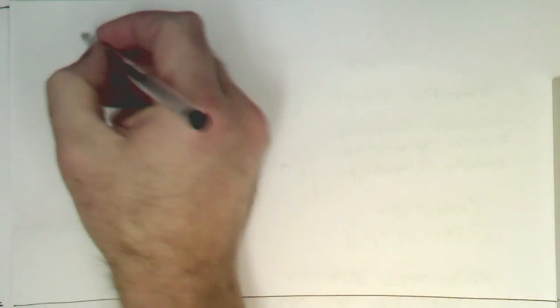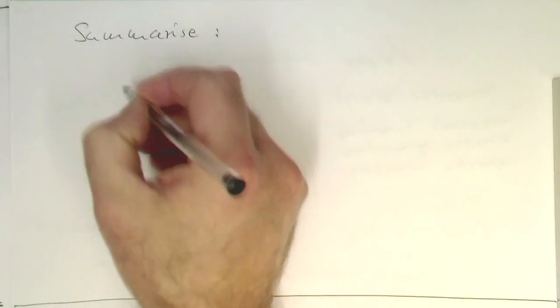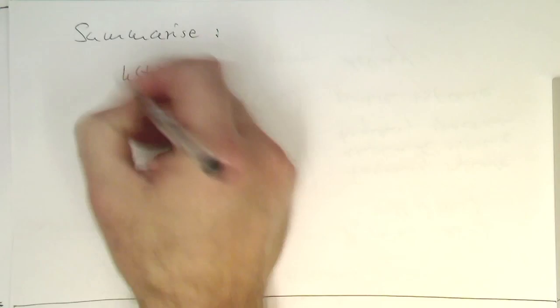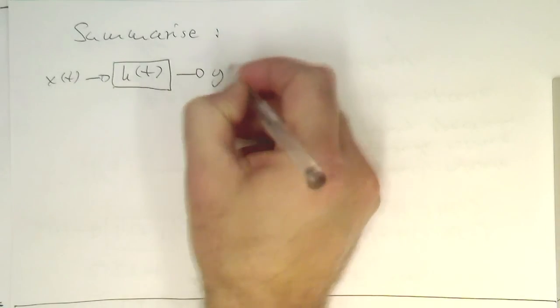So, let's just summarize. If we have a filter h of t, so impulse response, and we're sending x of t in, and we're getting y of t out,